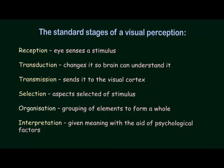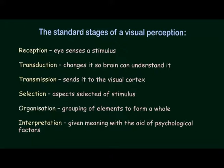Any kind of visual perception involves certain standard stages: reception, when the eye senses a stimulus; transduction, when it changes so that the brain can understand it; transmission, when that visual sensation is sent to the visual cortex; selection, where aspects of the stimulus are selected; organization, where grouping of elements forms a whole; and finally interpretation, when meaning is given and constructed through this process of visual perception.